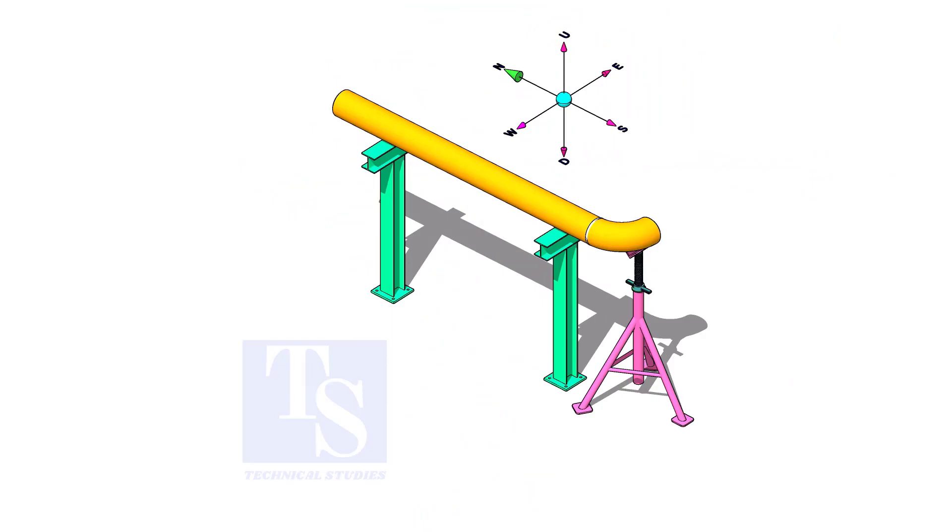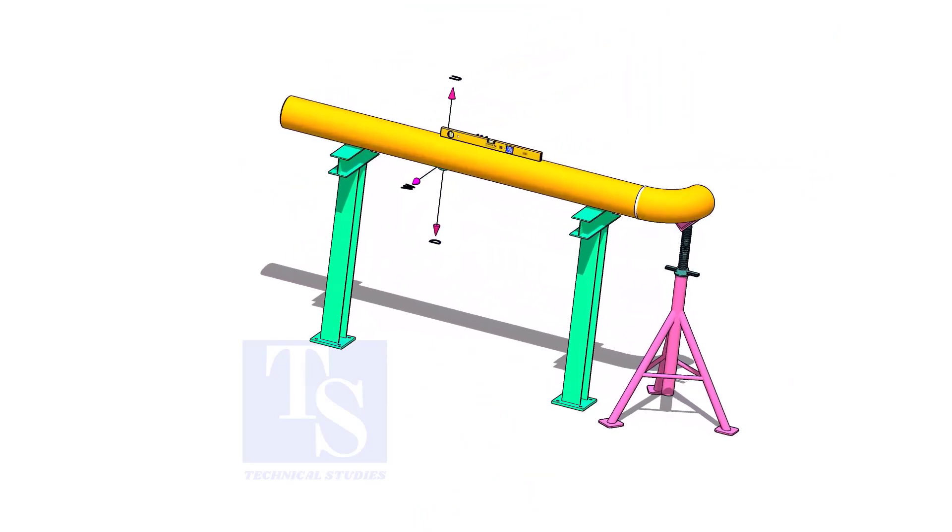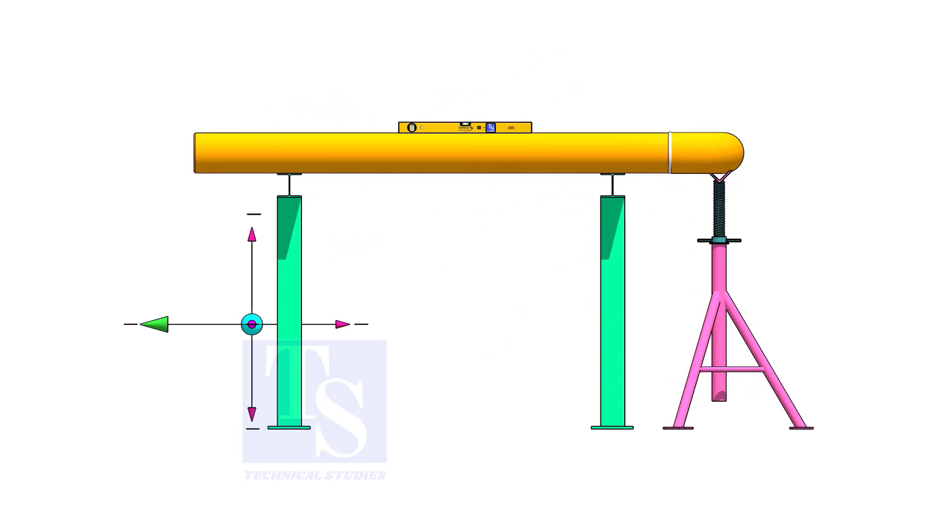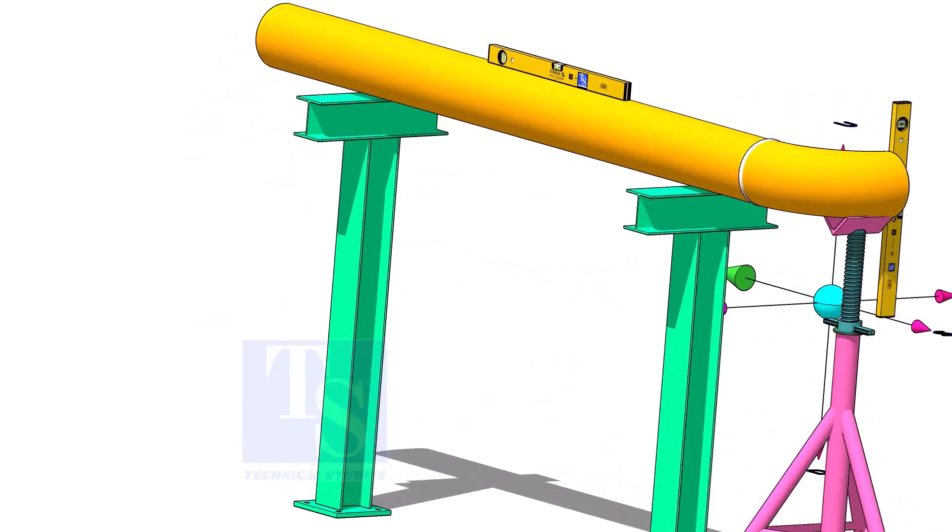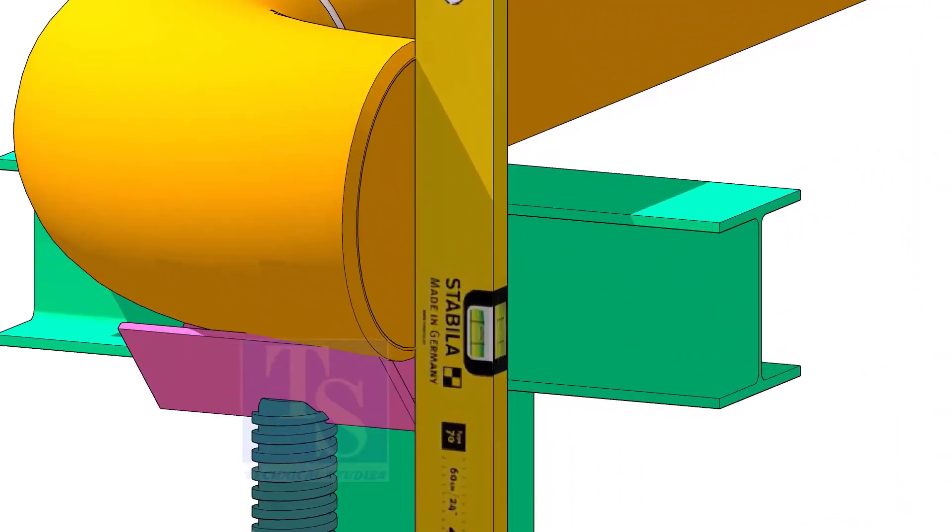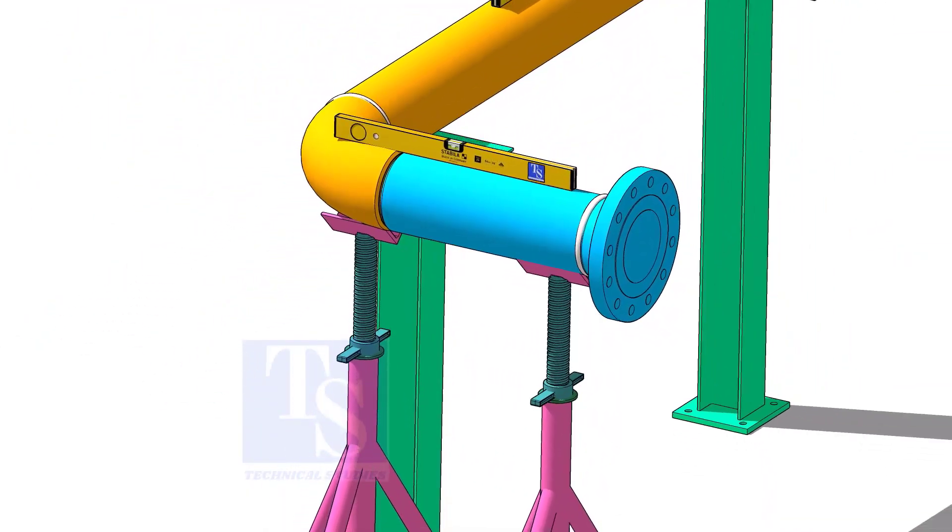Put spool 3 on its location and check the level of the pipe. Put spool number 2 in its position and level it.